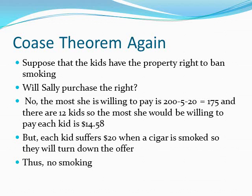Now let's do the other case — this is the famous Coase theorem at work. Suppose the kids have the property rights to ban smoking. Will Sally purchase the right to smoke a cigar? The answer is no. The most she's willing to pay is $175 for the right to smoke. With 12 kids, the most she'd pay each is $14.58. But we know each kid suffers $20 when a cigar is smoked, so they would never accept $14.58. They turn down the offer, and Sally's not willing to pay $20 to each of the 12 children to earn the right to smoke.